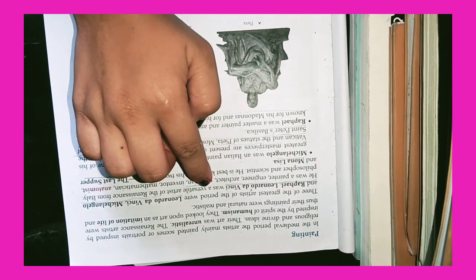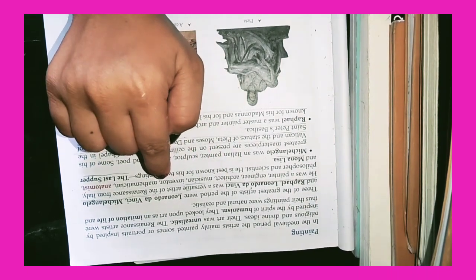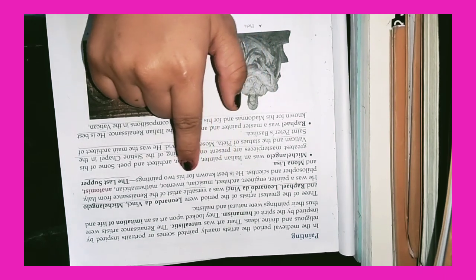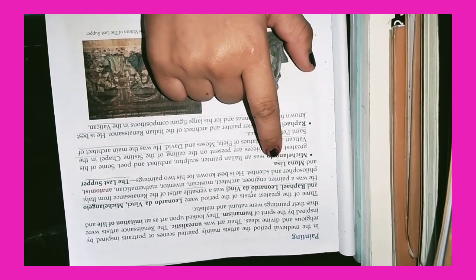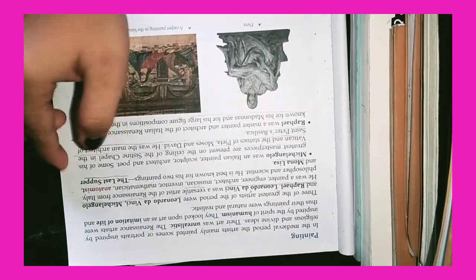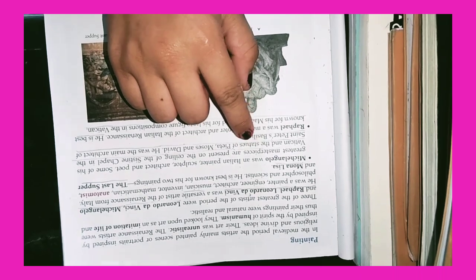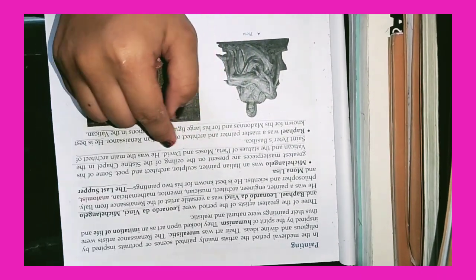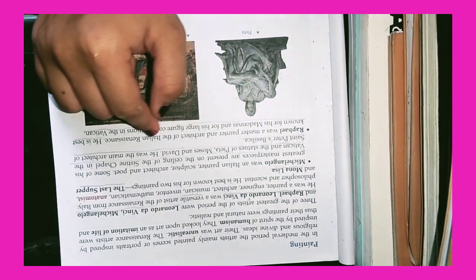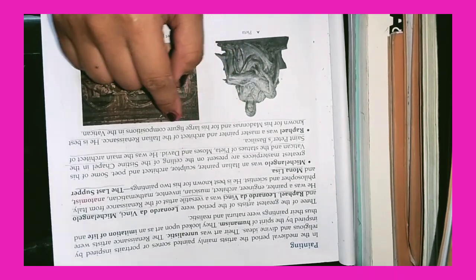Leonardo da Vinci was a versatile artist of Renaissance from Italy. He was a painter, engineer, architect, musician, inventor, mathematician, anatomist, philosopher, and scientist. He is best known for his two paintings, The Last Supper and Mona Lisa. Michelangelo was an Italian painter, sculptor, architect, and poet. Some of his greatest masterpieces are present on the ceiling of the Sistine Chapel in the Vatican and statues of Pieta, Moses, and David. He was the main architect of St. Peter's Basilica. Raphael was a master painter and architect of the Italian Renaissance. He is best known for his Madonnas and for his large figure compositions in the Vatican.